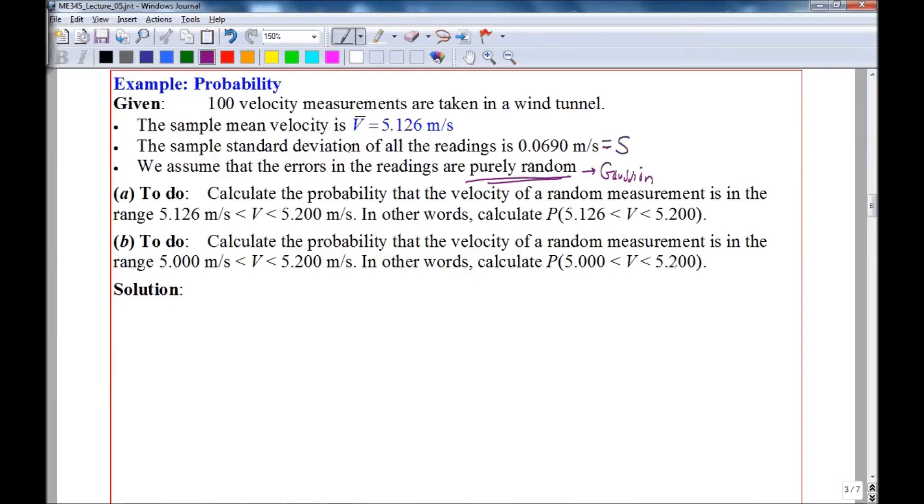In part A, let's calculate the probability that the velocity of some random measurement in this sample is in the range given. In other words, we want to calculate this probability.